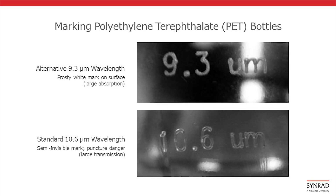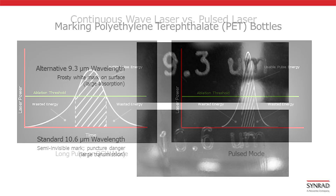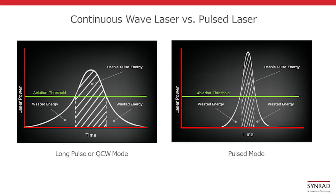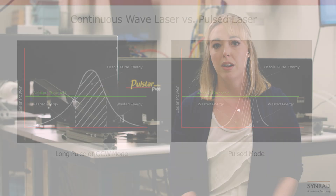The laser can be either pulsed or continuous wave. Pulsed lasers produce a series of pulses at high peak power. This delivers energy more efficiently and can reduce heat affected zone, penetrate thin materials more quickly, or pierce challenging materials like metals.